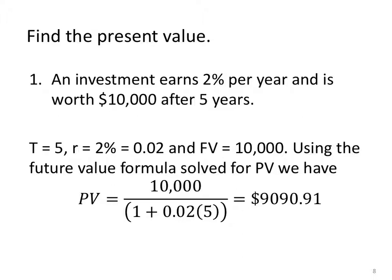Now let's find the present value. We know an investment earns 2% per year and is worth $10,000 after 5 years. The time is 5 years. Our interest rate, 2%, .02. The future value is worth after 5 years tells us we have a future value. So the future value is $10,000. We're going to use the future value formula solved for present value to get PV equals $10,000 over 1 plus .02 times 5, and I enter it in my calculator exactly like this, parentheses and all, to get $9,090 and it'll round to 91 cents present value.